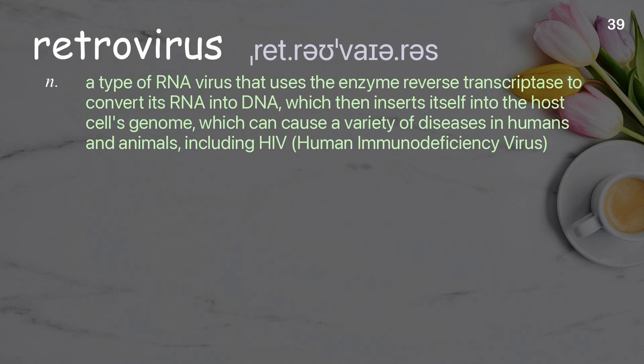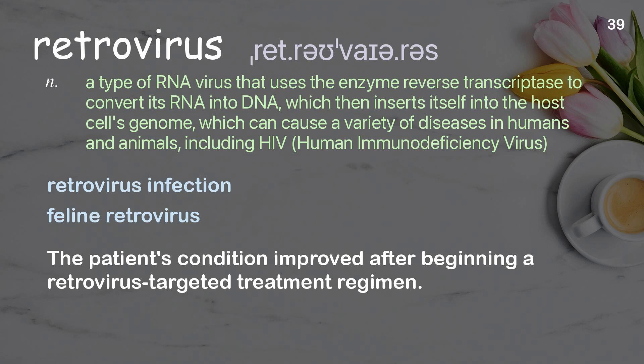Retrovirus: a type of RNA virus that uses the enzyme reverse transcriptase to convert its RNA into DNA, which then inserts itself into the host cell's genome, and can cause a variety of diseases in humans and animals, including HIV, human immunodeficiency virus. Examples: retrovirus infection, feline retrovirus. The patient's condition improved after beginning a retrovirus-targeted treatment regimen.